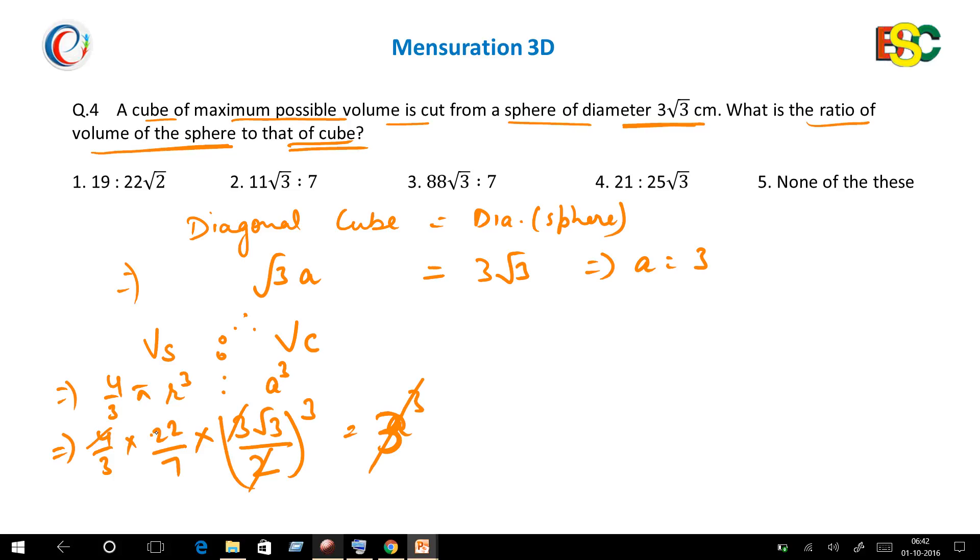You can rewrite this ratio as 11 × √3. The 3 will come here and get cancelled with this 3 in the denominator, to 7. So the required ratio is 11√3:7, so option 2 is the correct answer.